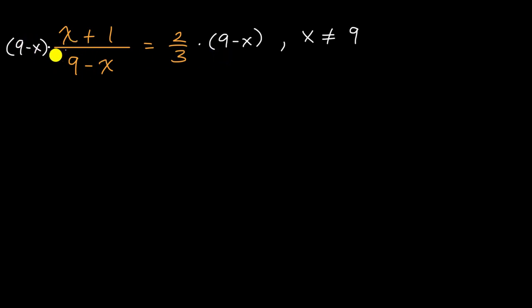So on the left-hand side, as long as x does not equal nine, if we multiply and divide by nine minus x, they cancel out, and we'll just be left with x plus one. And on the right-hand side, if you multiply two-thirds times nine minus x, we get two-thirds times nine is six, and then two-thirds times negative x is negative two-thirds x.